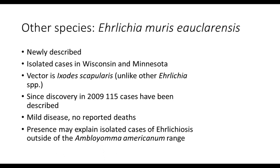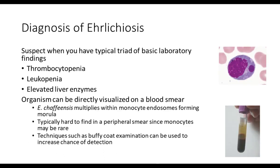There are other species that can cause ehrlichiosis. One is Ehrlichia muris ocularensis, a newly described species. There have been isolated cases in Wisconsin and Minnesota. The vector for this is different — it's Ixodes scapularis. Since its discovery in 2009, 115 cases have been described. This too causes a very mild disease with no reported deaths, and its presence may explain some isolated cases of ehrlichiosis outside the Amblyoma americanum range.